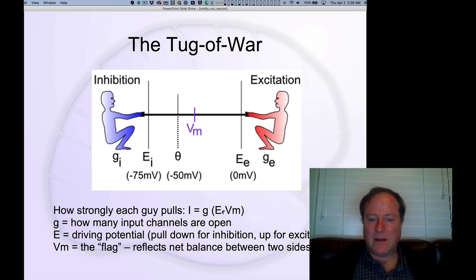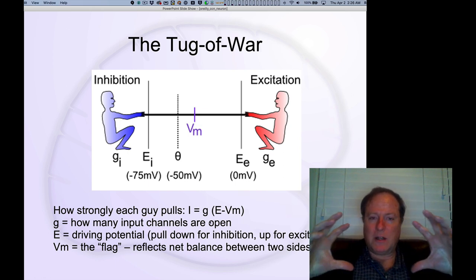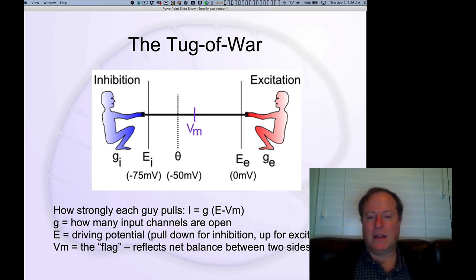That is literally expressed right here in this equation. The current I is equal to the conductance, how big the pipes are, how much current is able to flow at maximum.